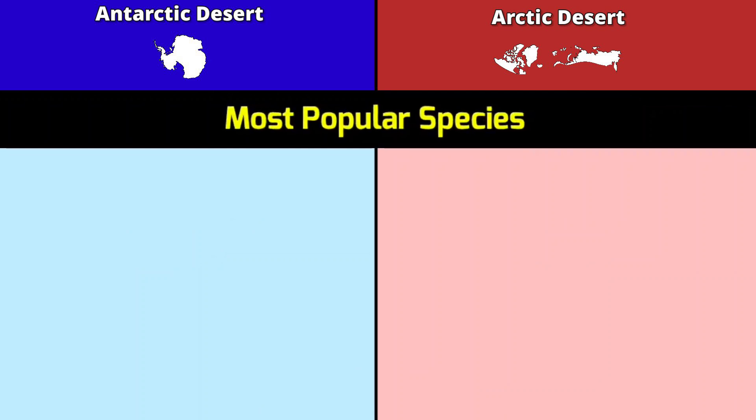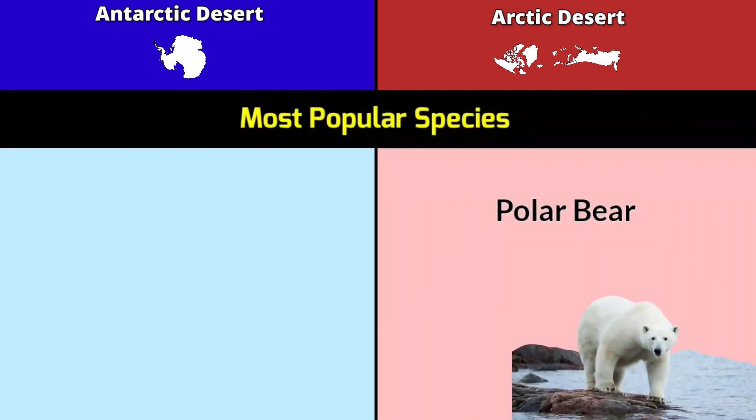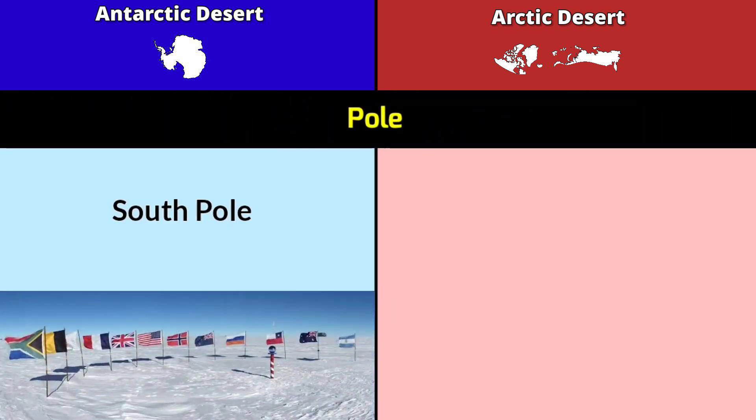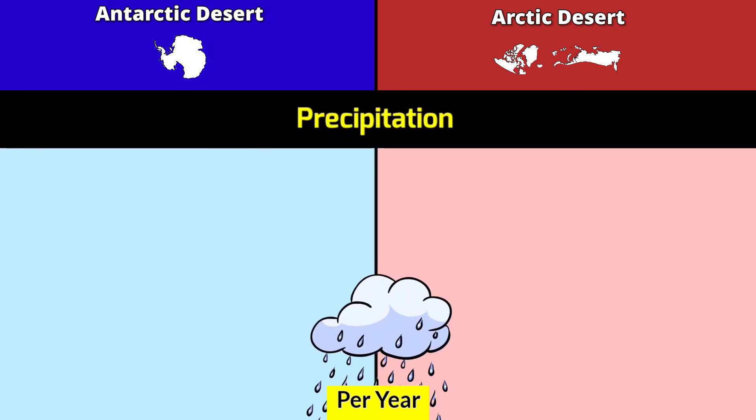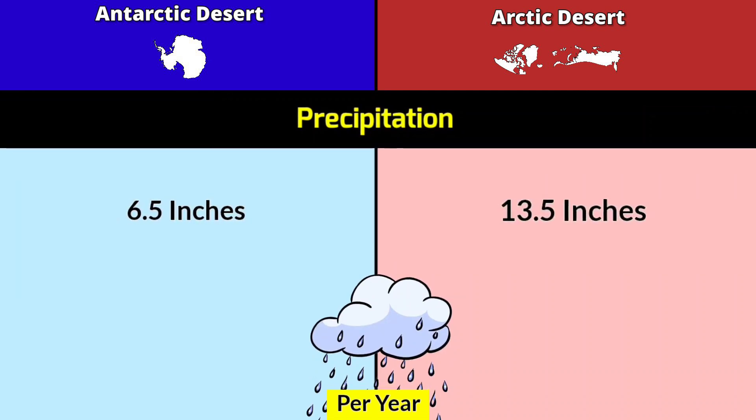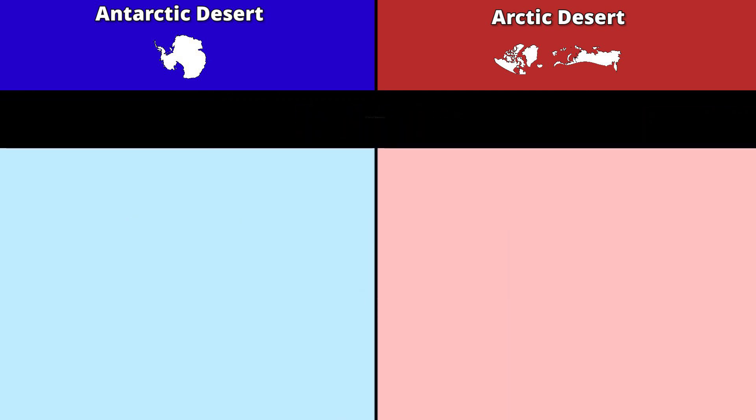Most popular species: Antarctica Desert has polar bears; Arctic Desert has penguins. Pole: South Pole vs North Pole. Precipitation per year: Antarctica Desert receives 6.5 inches; Arctic Desert receives 13.5 inches.